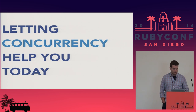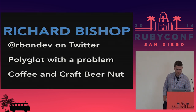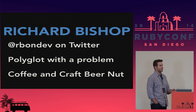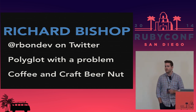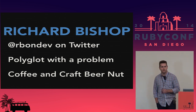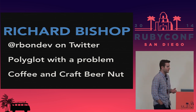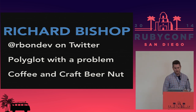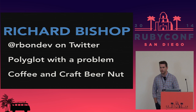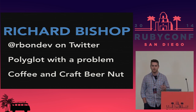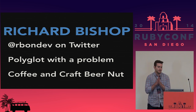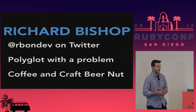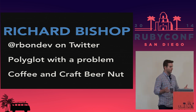A little bit more about me. I'm a self-proclaimed polyglot with a problem — I love programming languages. If you're not looking at another language to play with just to bend your mind in different ways, you really should. There's a lot of interesting stuff out there right now, and a lot of them are dealing with concurrency in interesting ways, and that had an impact on me as a Rubyist. Away from the keyboard, I'm a huge coffee and beer nut, and it's great that this is in San Diego because I used to live here. We have the best beer in the world in my opinion.